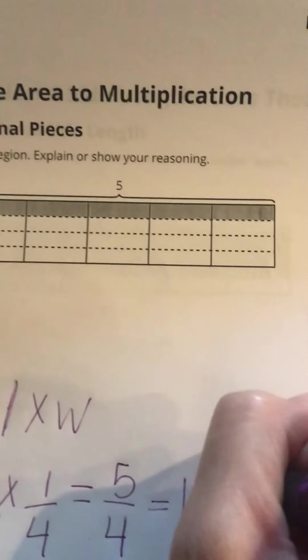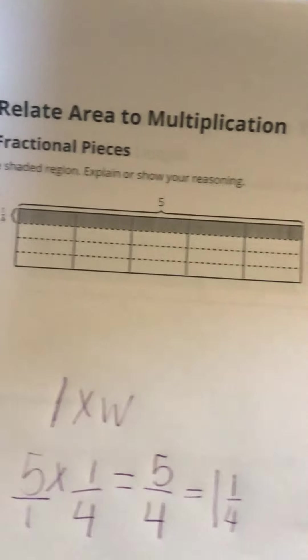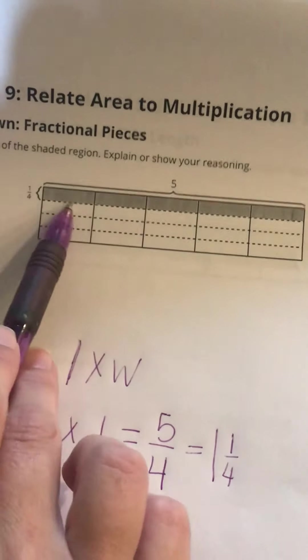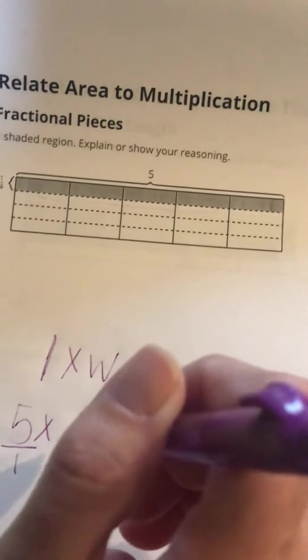So 5/4 is the same as 1 and 1/4. When I'm counting these, I've got the four here and then I've got this extra 1/4, so I can either name that as 5/4 or 1 and 1/4.